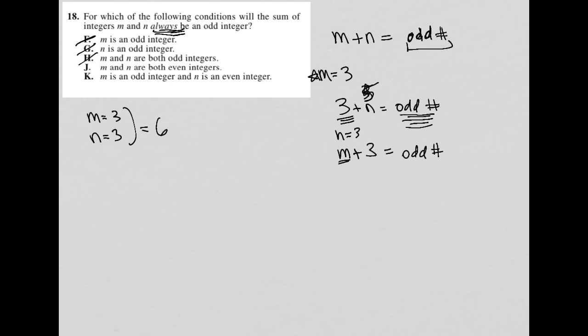If I had said even m is 1 and n is 3, that would have been 4, right? So those are two examples where that's definitely not the case. Choice J, m and n are both even integers.